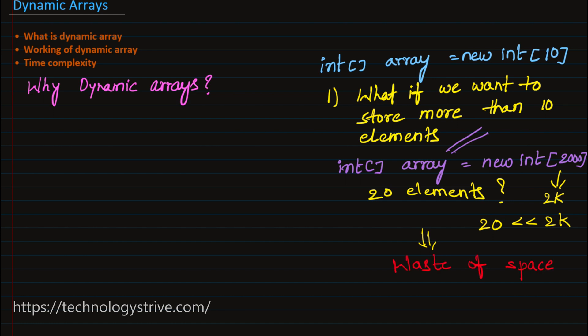So we need a data structure that can allow us to grow in size when needed, and also shrink in size when we are sure we don't need any extra space. A dynamic array is one such data structure — it can grow and shrink in memory whenever required.